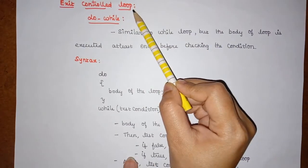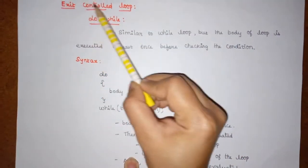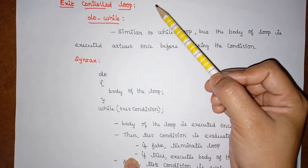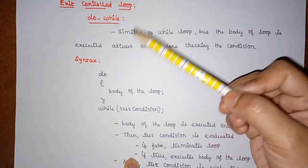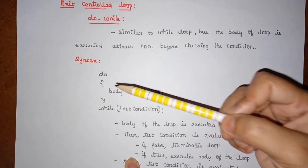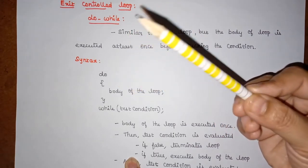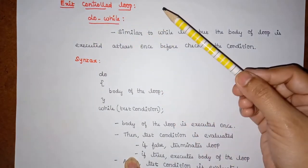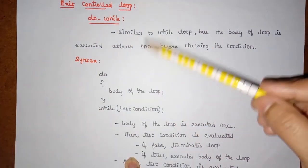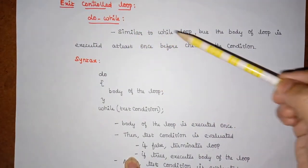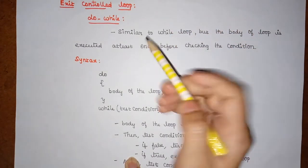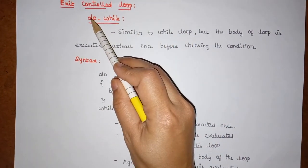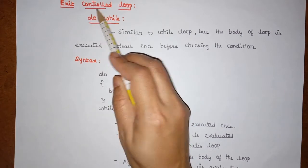The next classification of loop is the exit control loop. In an exit control loop, the condition is checked at the exit point. First the loop gets executed one time, and after the execution the condition is checked. Based on the condition, the loop gets executed repeatedly. This is similar to the while loop, and the first category under exit control loop is do-while.